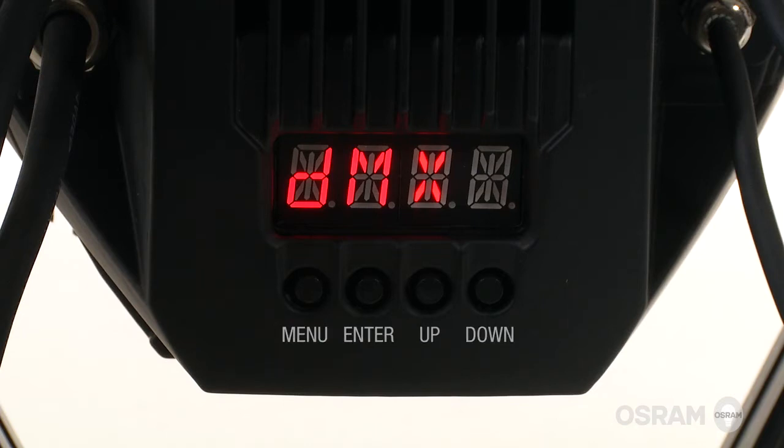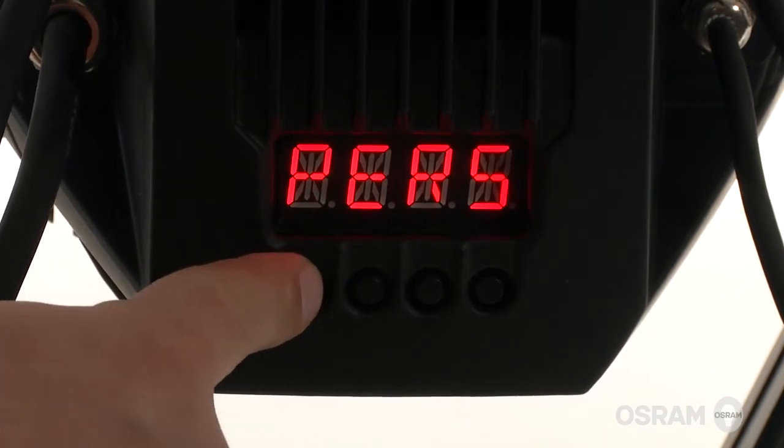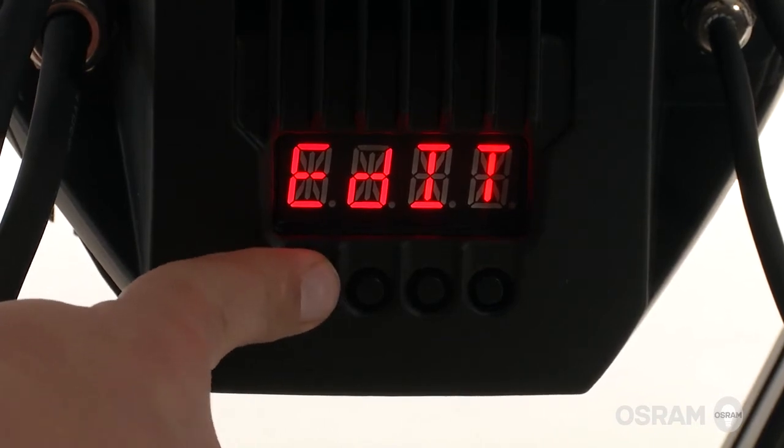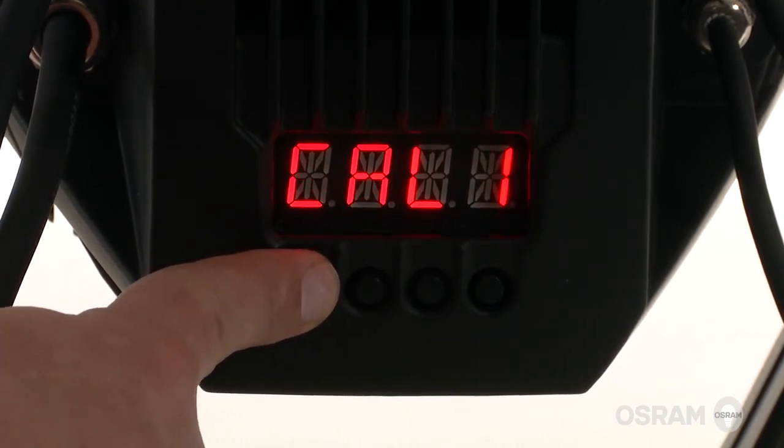The KRAOS PAR can be operated via the 4-button display on the backside or DMX512. The different programs can be selected by the onboard control buttons.